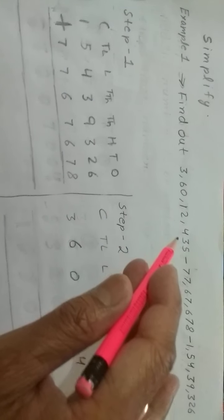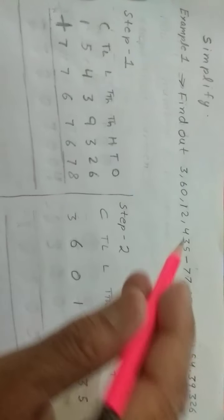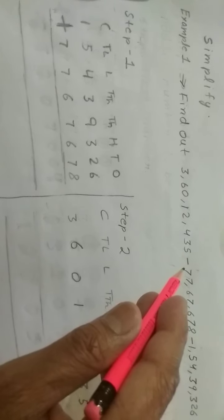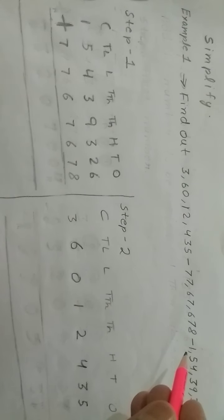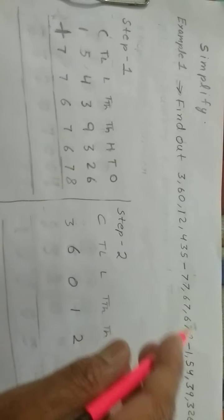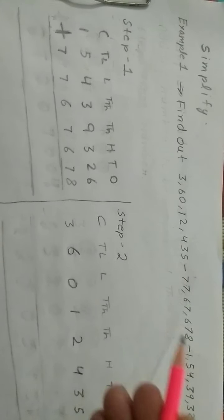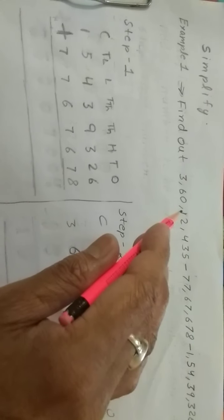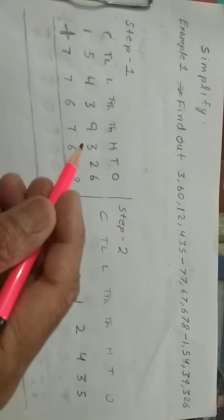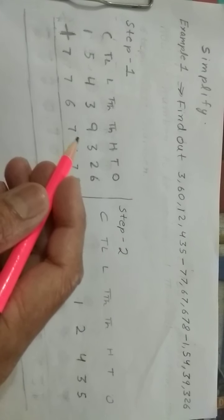Example 1: here we have three numbers — 3 crore 60,12,435 with no sign (means plus), then 77,67,678 with a minus sign, and 1 crore 54,39,326 with a minus sign. What we have to do: we will add these two negative-sign numbers first, and whatever sum we get, we will subtract that from the first number 3 crore 60,12,435. Let us arrange these two numbers in columns — ones under ones, tens under tens, hundreds under hundreds, and so on.